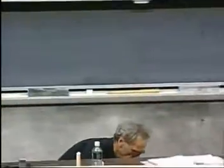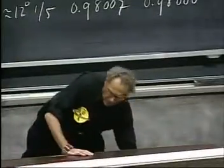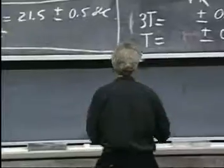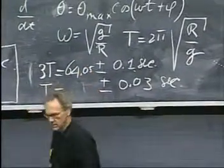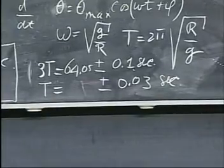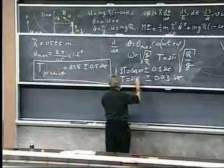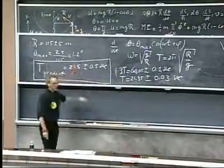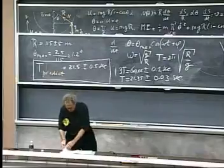64.05. So 3T equals 64.05. I divide that by three. That is 21.35 plus or minus .03. It's exactly in agreement with the prediction, with the uncertainty of the prediction.